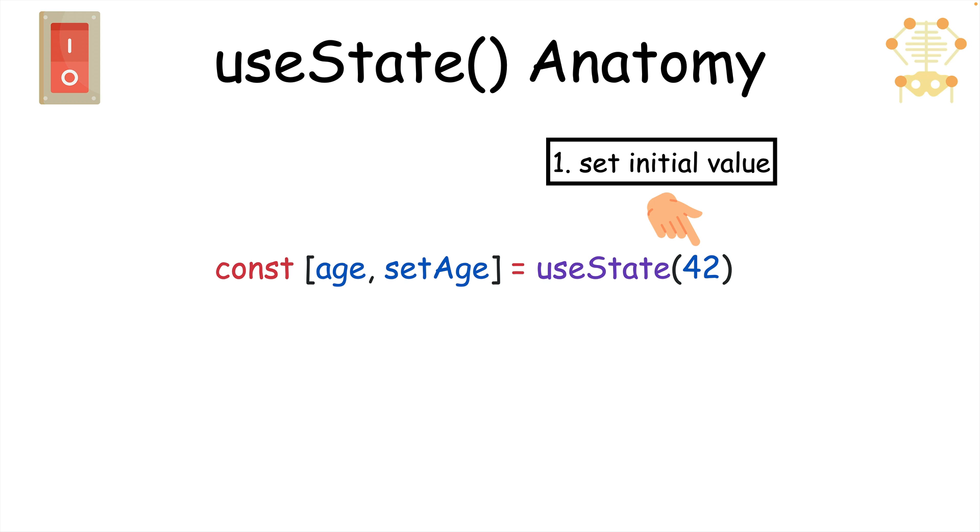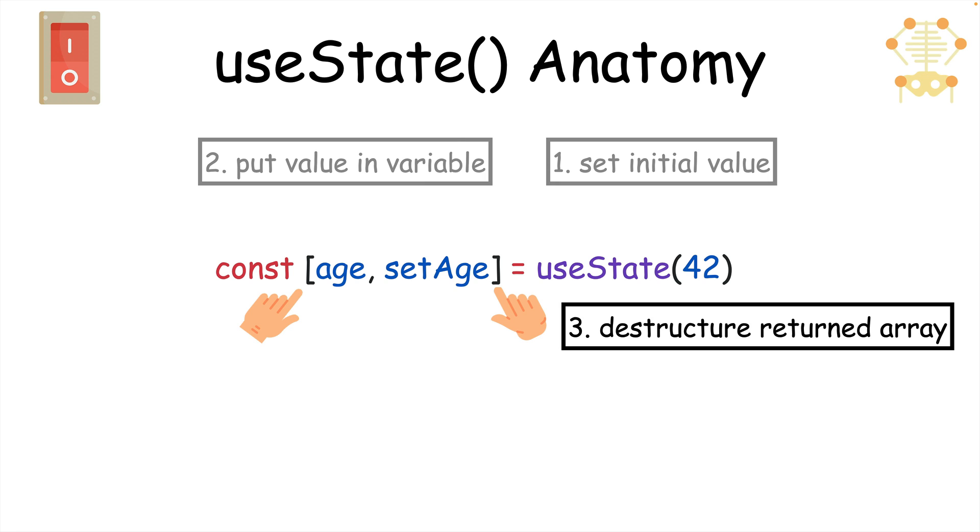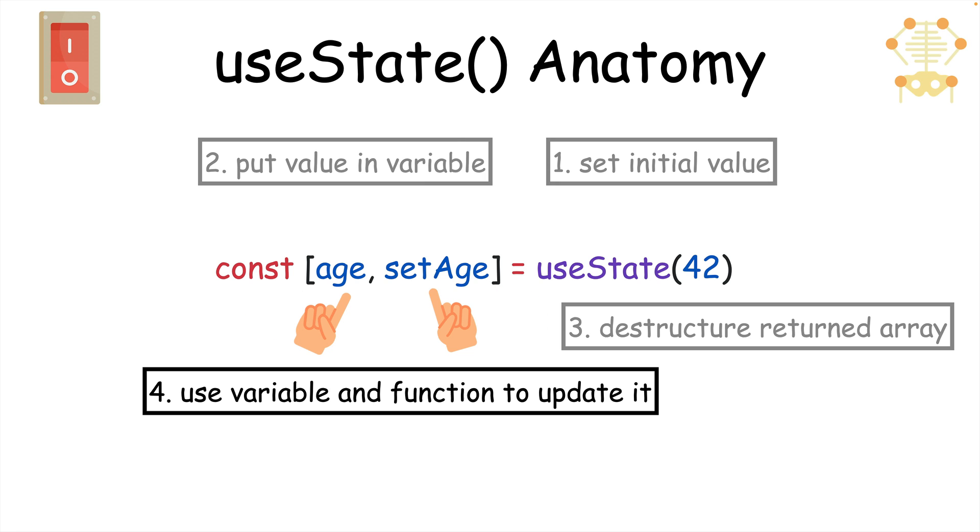To use it, you can give it an initial value, which can virtually be any JavaScript value. And that will then be stored in your state variable that's returned when you call useState. It's returned in an array which can be destructured as two separate variables, where the first one is the state variable, and the second is a function to update that variable.